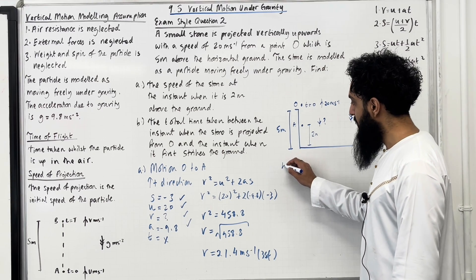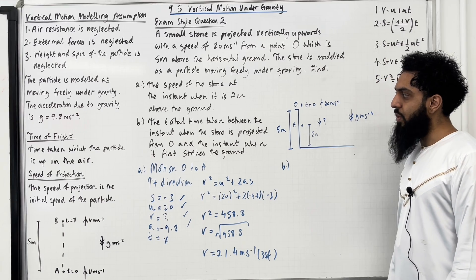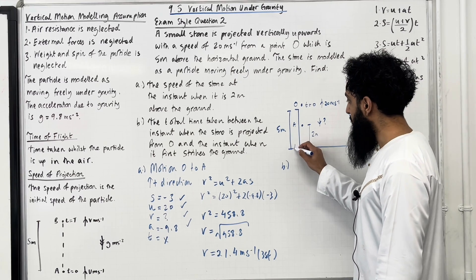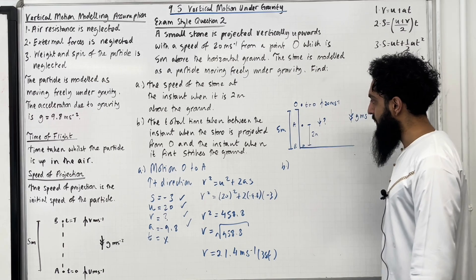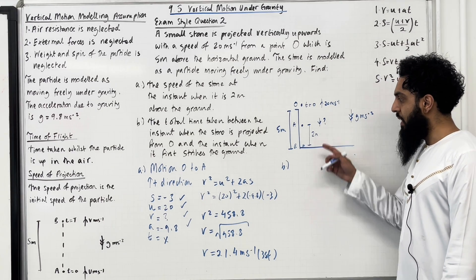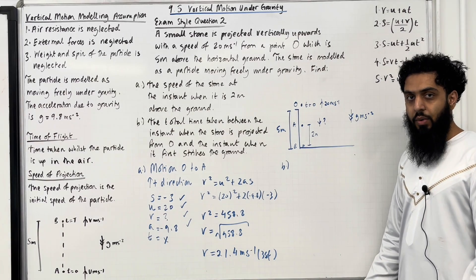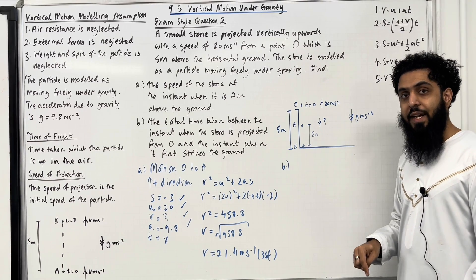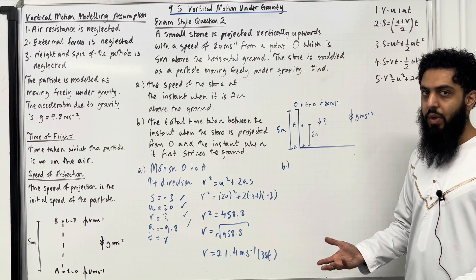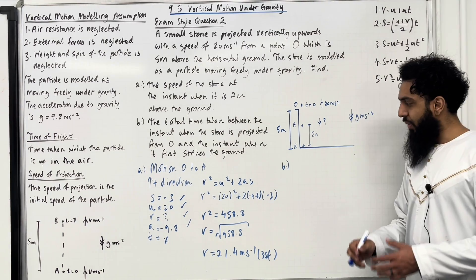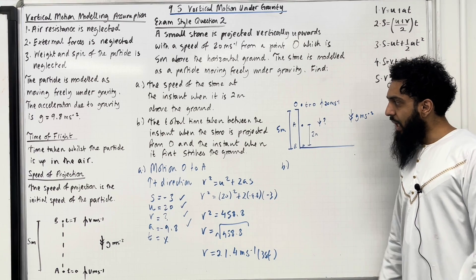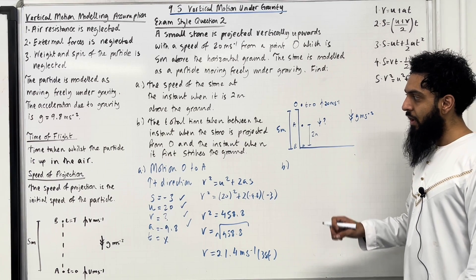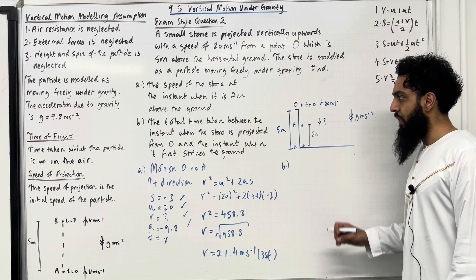Let's move on to part B: the total time taken between the instant when the stone is projected from O and the instant when it first strikes the ground. Let's call point B the point at which the stone strikes the ground. There's a misconception — some people feel the velocity when the stone strikes the ground will be 0 because it comes to rest. That's incorrect: at the instant it strikes the ground, it hits at a certain velocity. Let's go back to part B.